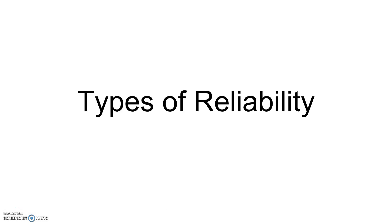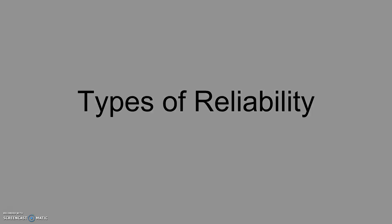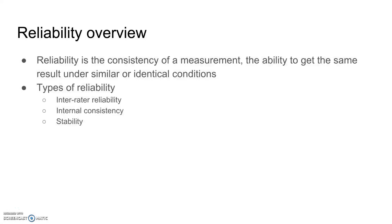This video will go over the types of reliability and a definition of each one. First, a quick overview of reliability. Reliability is the consistency of a measurement or the ability to get the same result under similar or identical conditions. So another word for reliability is consistency.